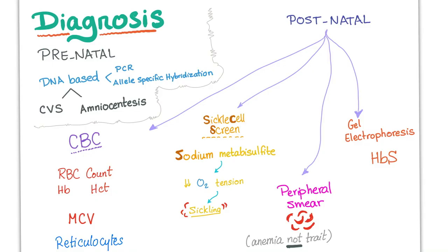How to diagnose this disease? Prenatally and postnatally. Prenatally, while the baby is still in the mother's womb, you can do DNA-based testing, such as PCR or allele-specific hybridization. There are two methods to obtain the DNA: either by chorionic villus sampling or amniocentesis. I've made a video before explaining CVS, so you can check it out.